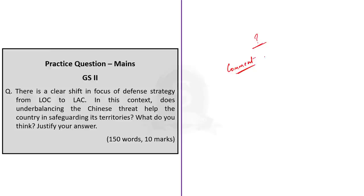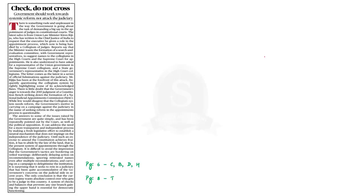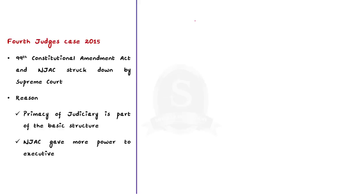Through this discussion, we learnt about various threats posed by China along the Line of Actual Control, India's response to it, and the author's opinion about India's responses to the Chinese threat. Now let's move on to the next news article — an editorial about the ongoing conflict between the union government and the judiciary. It covers the recent suggestions made by the union law minister to the Chief Justice of India regarding appointments to the constitutional courts. To understand the context behind it, we must go back to the fourth judges case.